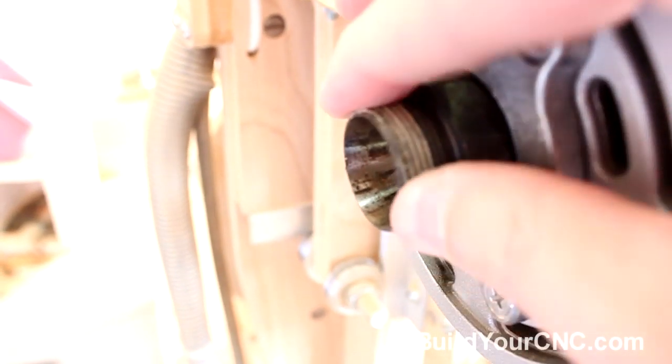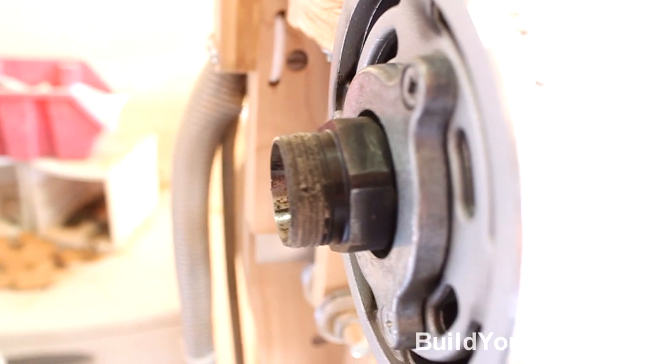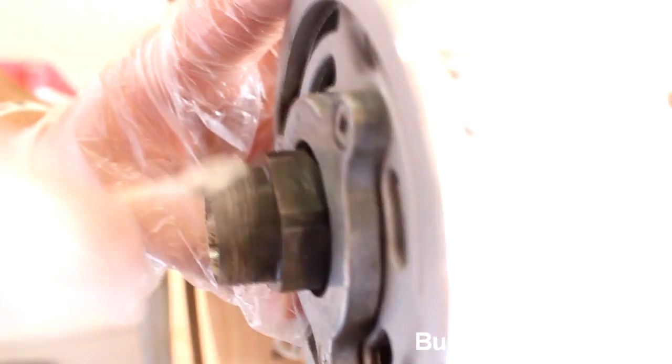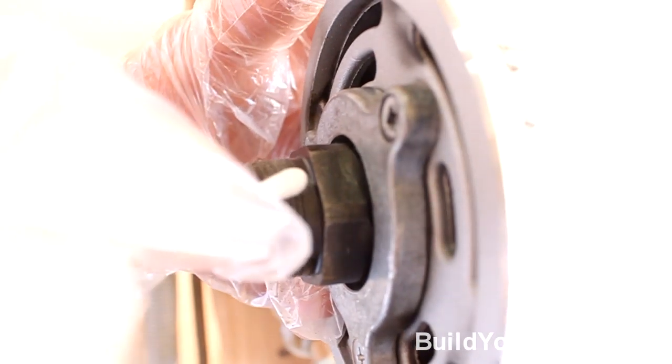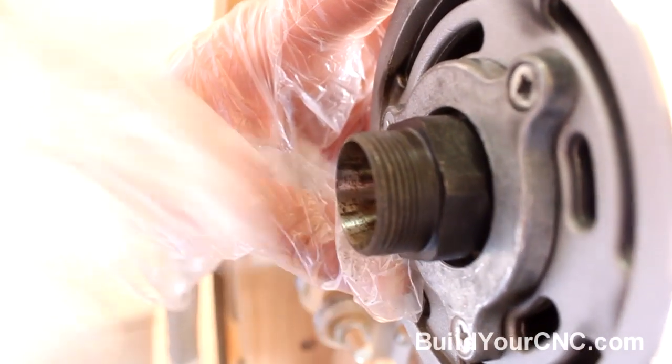First what we're going to do is clean up the outside threads of this so it doesn't have any binding or any effect on the nut, the placement of the nut. We're just going to try to get as much debris as we can off of the threading. That's pretty good.